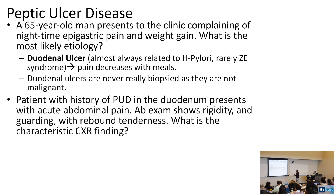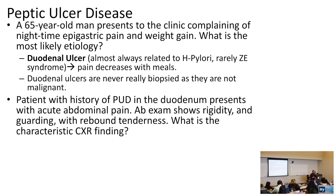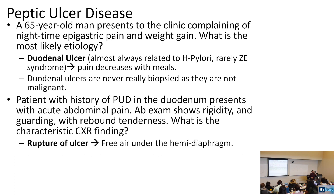A patient with a history of duodenal ulcer presents with an acute abdomen — rigidity, guarding, and rebound tenderness. The characteristic x-ray finding for this complication is air under the diaphragm, which indicates a perforated viscus. The duodenal ulcer has ruptured, and this is a surgical emergency.